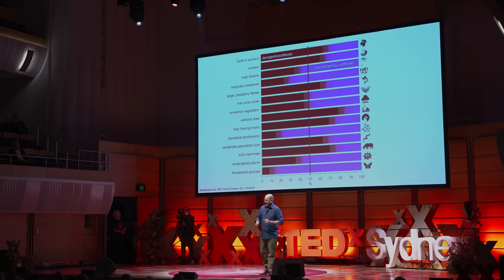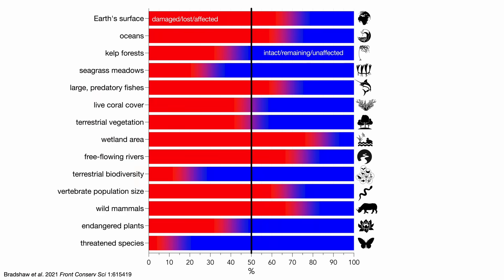It's not just vertebrates, though. Every single biodiversity metric we look at around the planet is painting the same story. You can look at live coral cover, total wetland area, the extent of free-flowing rivers, the number of large predatory fish. It's a clusterfuck.